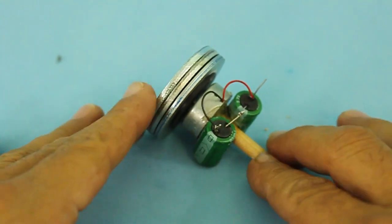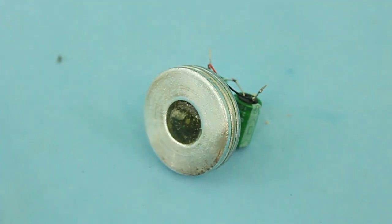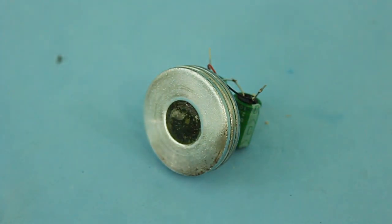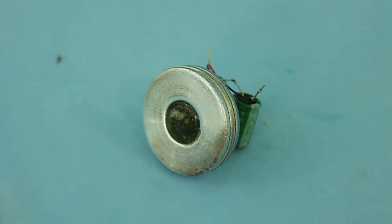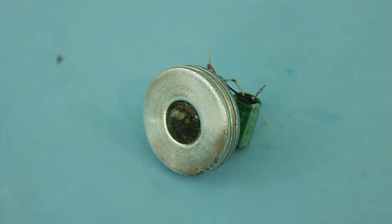A gyroscope is in its simplest form a mass in movement of rotation and is used to measure, maintain or change the orientation in space of a certain device.